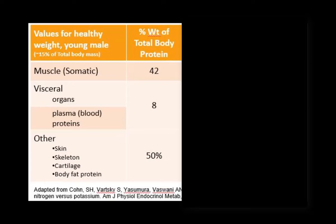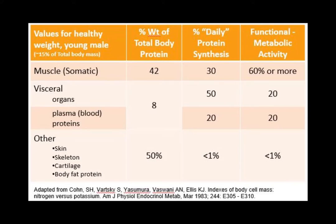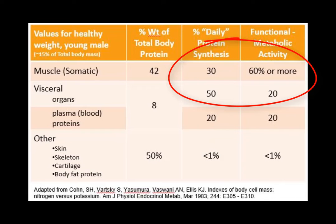This distribution can be misleading if we conclude it reflects the importance of each compartment, especially in relation to protein malnutrition and protein status assessment. Two additional columns provide more useful information: how much of daily protein synthesis is linked with each category, and how much functional and metabolic activity comes from each category. These two factors provide a much better understanding of which body proteins are most vulnerable to inadequate intake of protein and/or energy.